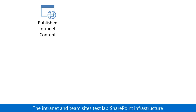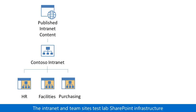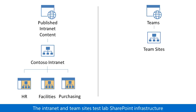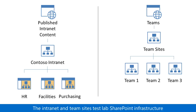The resulting infrastructure for the Published Intranet Content web application consists of the Contoso Intranet site collection and the three subsites for the HR, facilities, and purchasing departments. The resulting infrastructure for the Teams web application consists of the Teams site's root site collection and the site collections for Teams 1, 2, and 3.